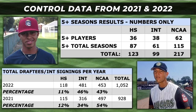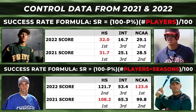In 2022, there were 118 high school players signed in the draft, making up 11% of that year. There were 481 international contracts signed, making up 46%, and 453 NCAA players signed, making up 43% of all players acquired in 2022. I ran this data from all players acquired in 2021 as well. High schoolers make up the smallest subgroup among total players acquired in both 2021 and 2022. Now that we have all of our data gathered, I'm going to explain how I created an SR, or success rate score.